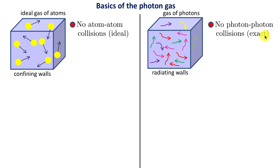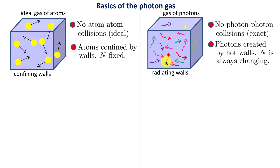Why don't photons collide with each other the way atoms do? That follows from quantum electrodynamics, which is very exact on this. Another key difference: in an ideal gas of atoms the number of atoms N is fixed, confined by walls. In a photon gas, the photons are created by the hot walls — the vibrating, colliding electrons are charges that radiate photons. As you increase the temperature of the walls, the number of photons inside increases. Even at constant temperature, N is always changing, fluctuating around an average value.